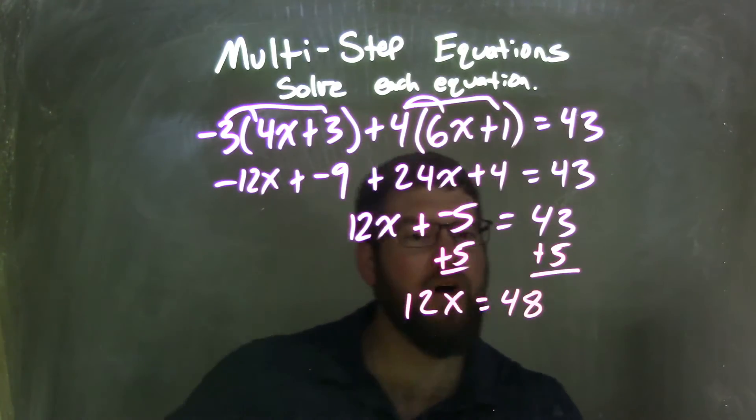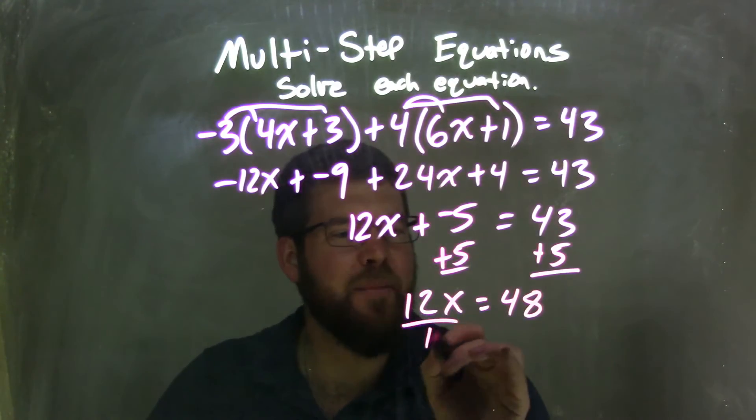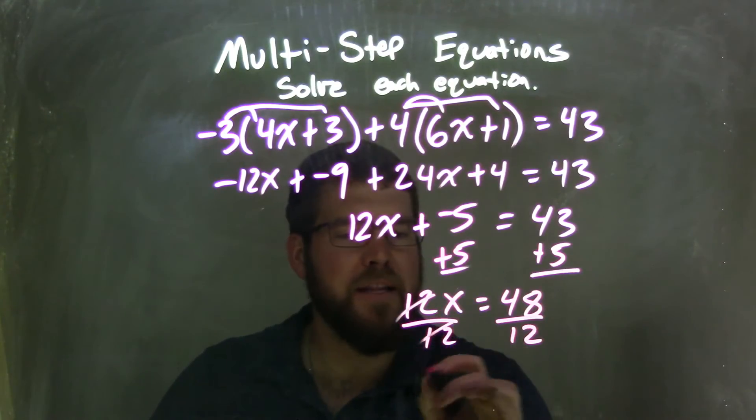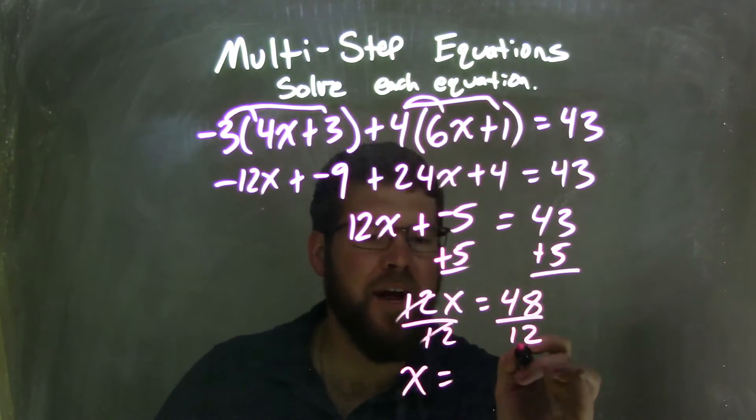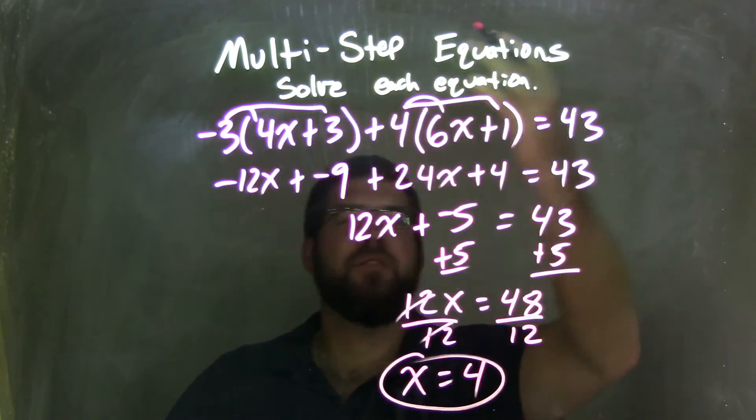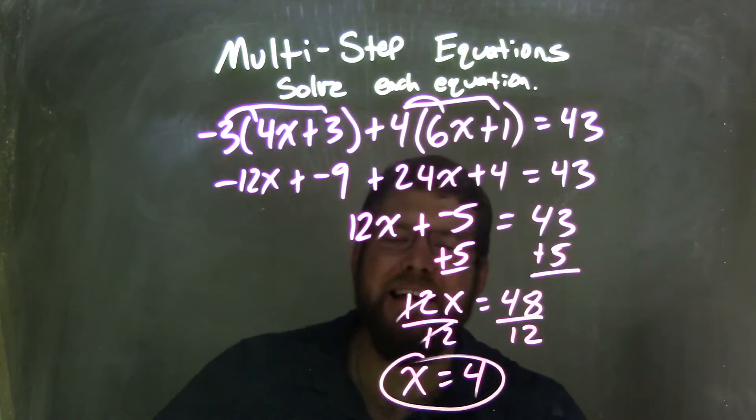How many times does 12 go into 48? We divide by 12 on both sides, and the 12s cancel, leaving me with x equals 48 divided by 12, which is just 4. So my final answer is x equals 4.